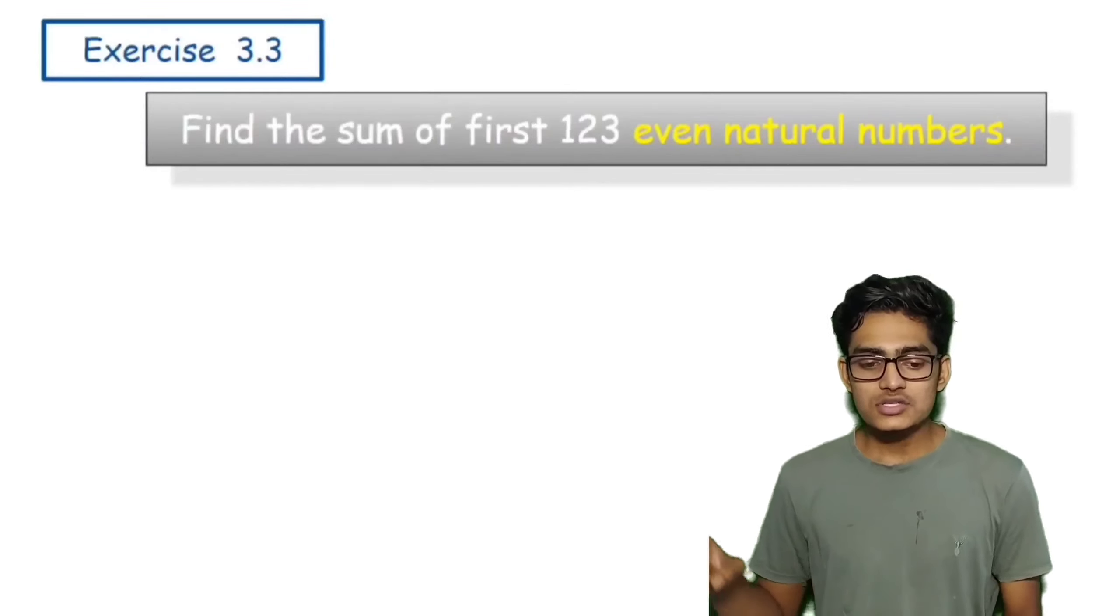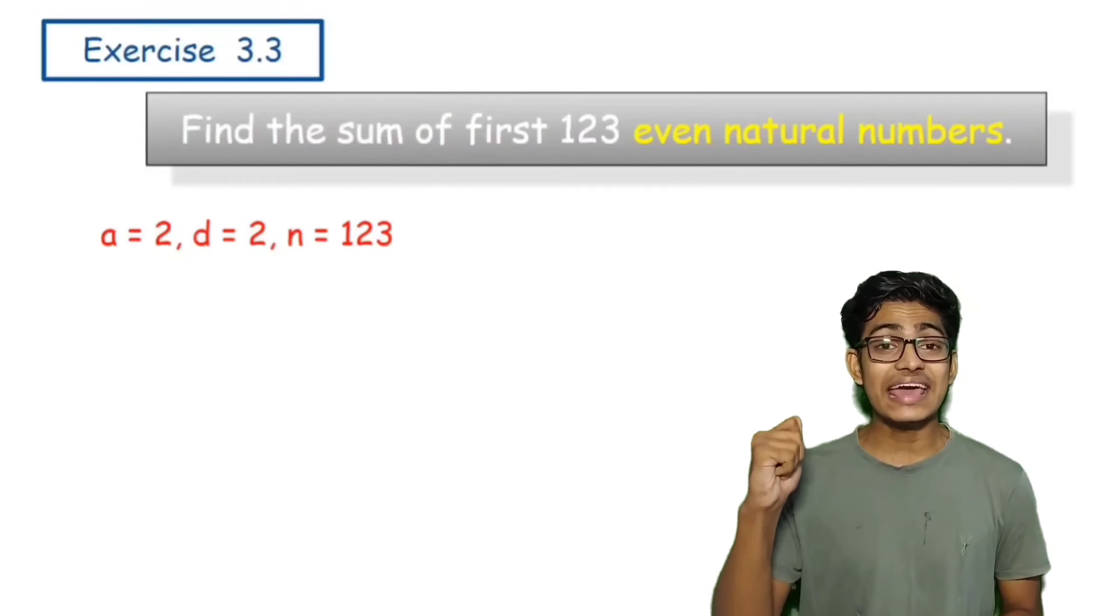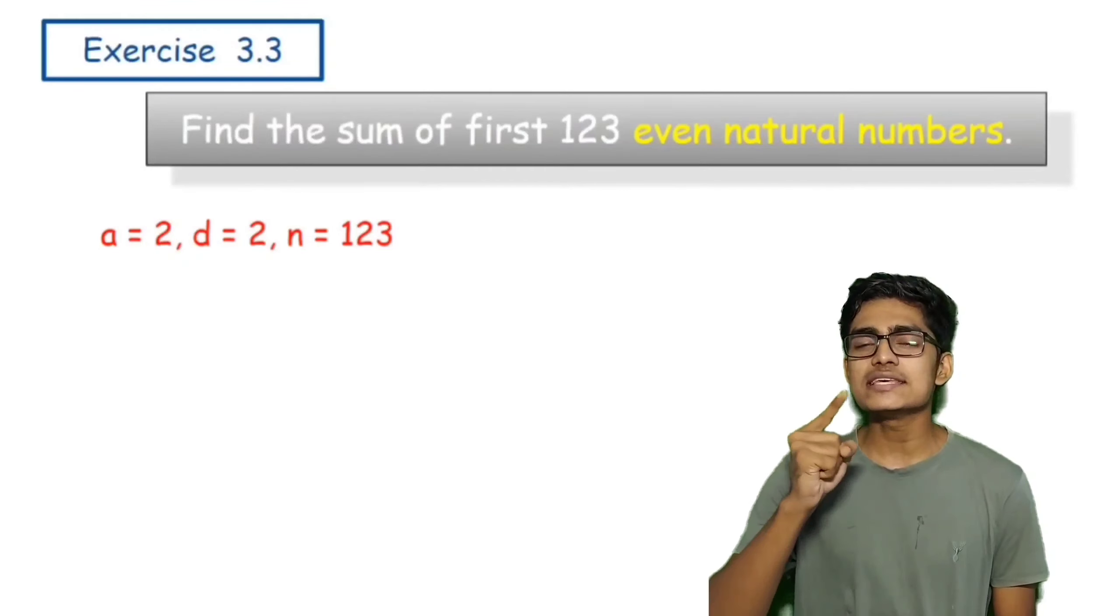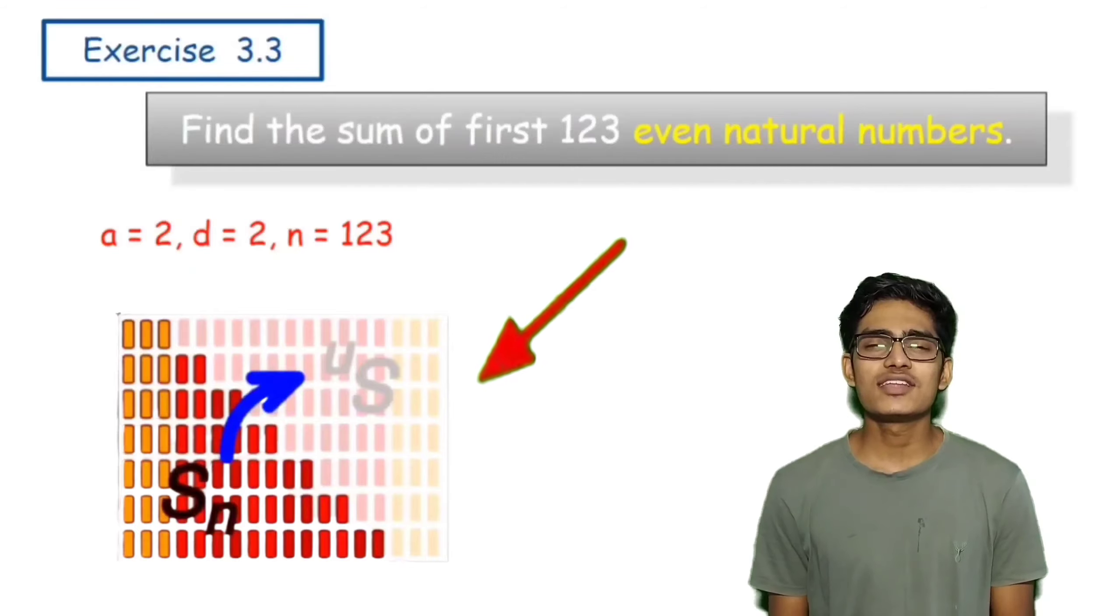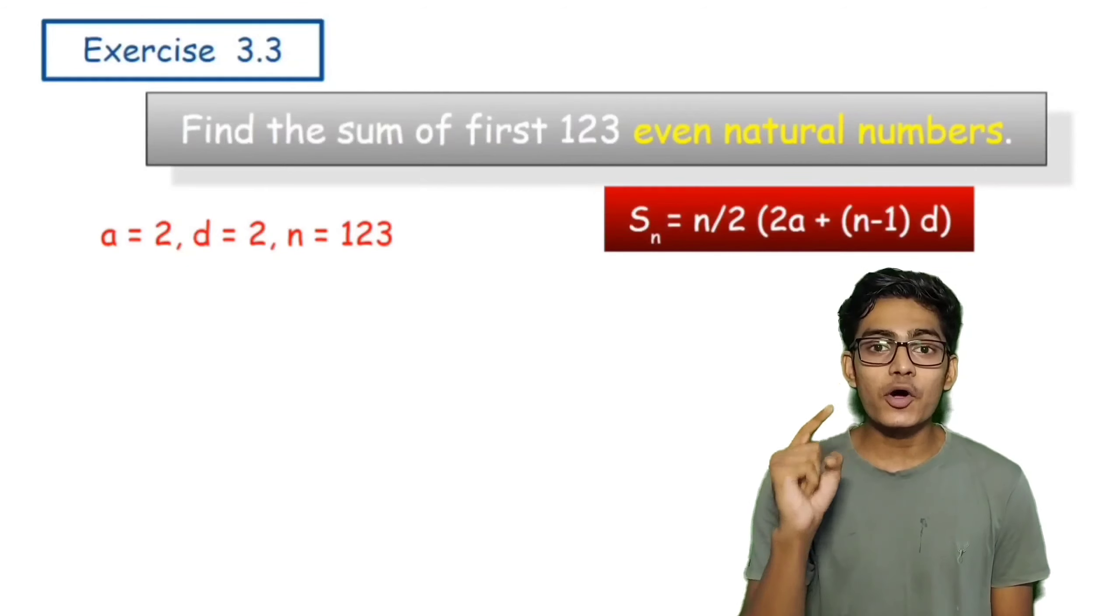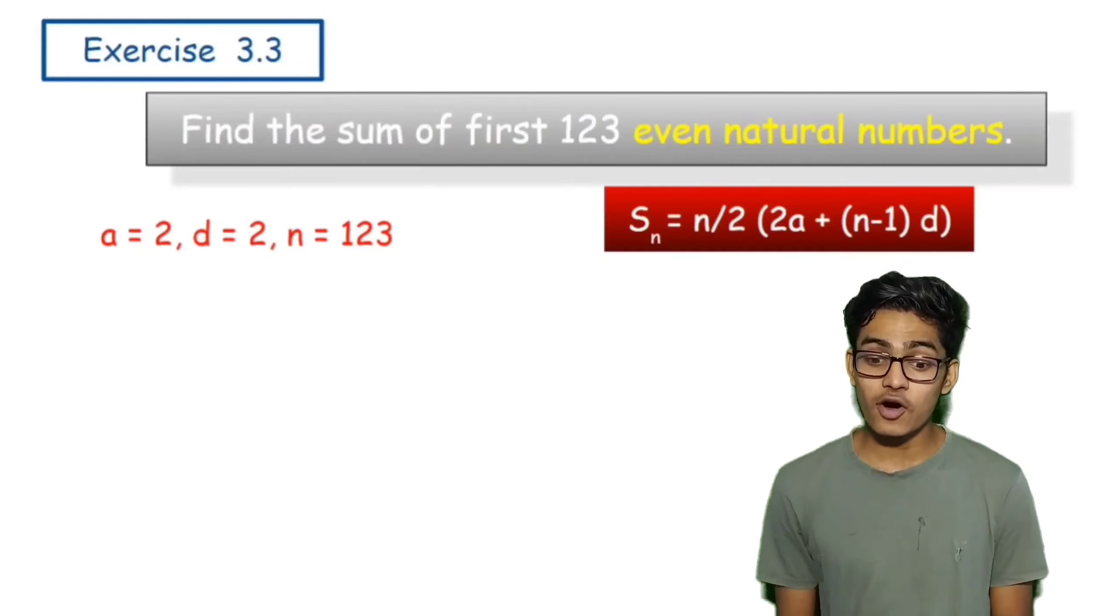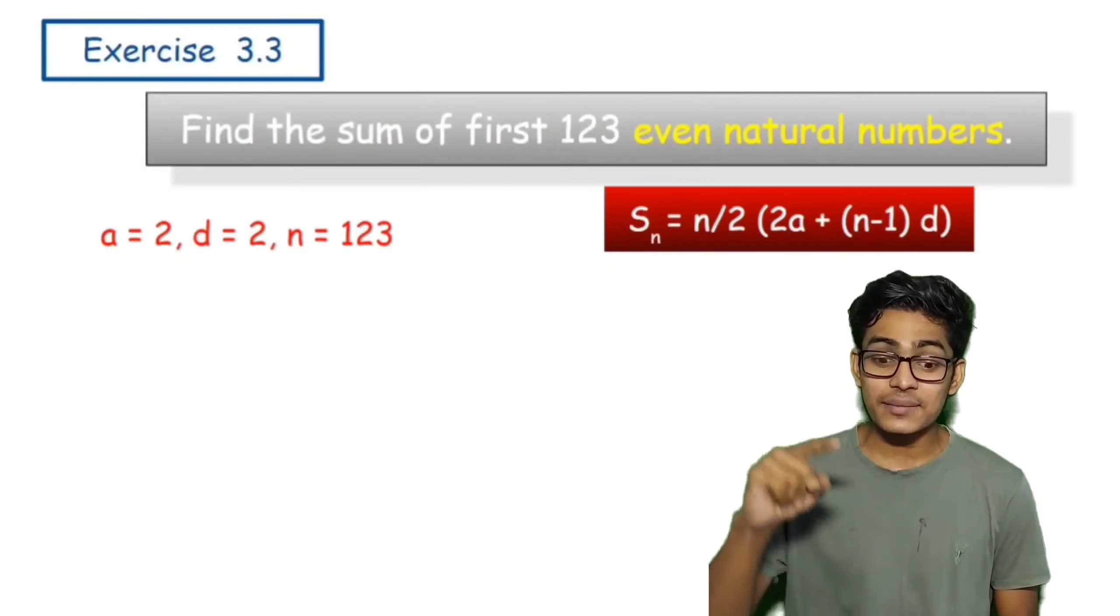Of course kya diya hai hum loko - diya hai a ka value, d ka value and n ka value. And from the previous videos we know s_n ka formula kya hota hai. S_n ka formula is n/2(2a + (n-1)d). This is the formula for s_n. So let's quickly substitute each and everything. Hume n ka value malum hai, hume 123 talak